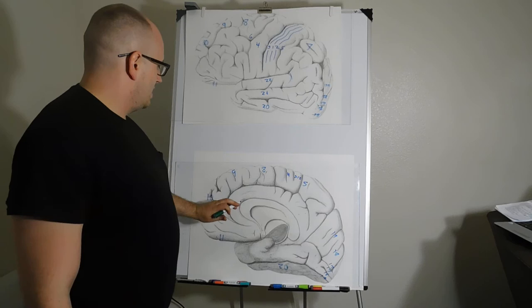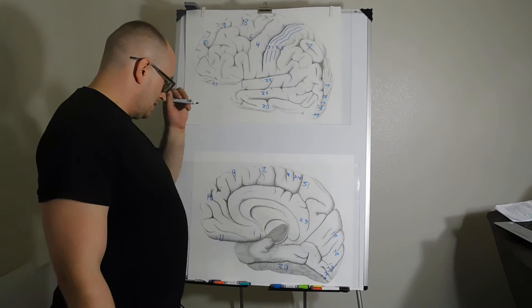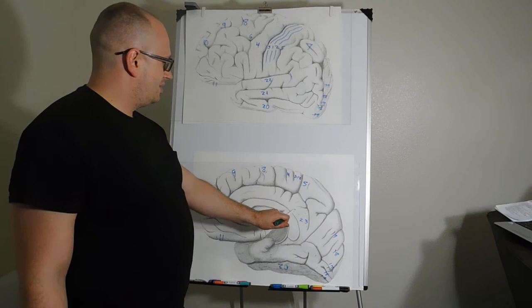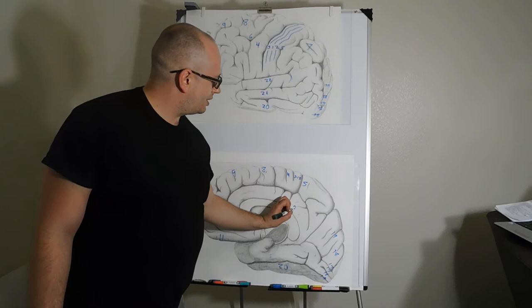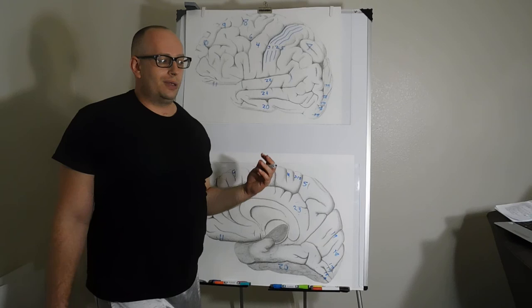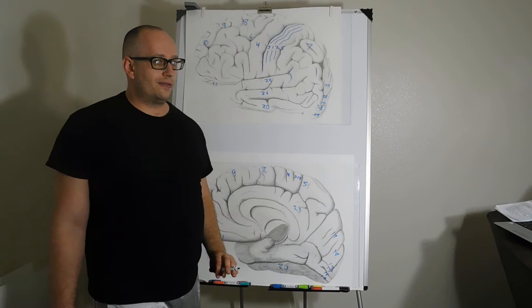Brodmann area 23 is in your posterior cingulate cortex. This area is active when you're not doing a task and you're just thinking, without needing to pay attention to something specific. It's kind of the inverse of an attentional network — it's highly active during those resting, wandering thought states.